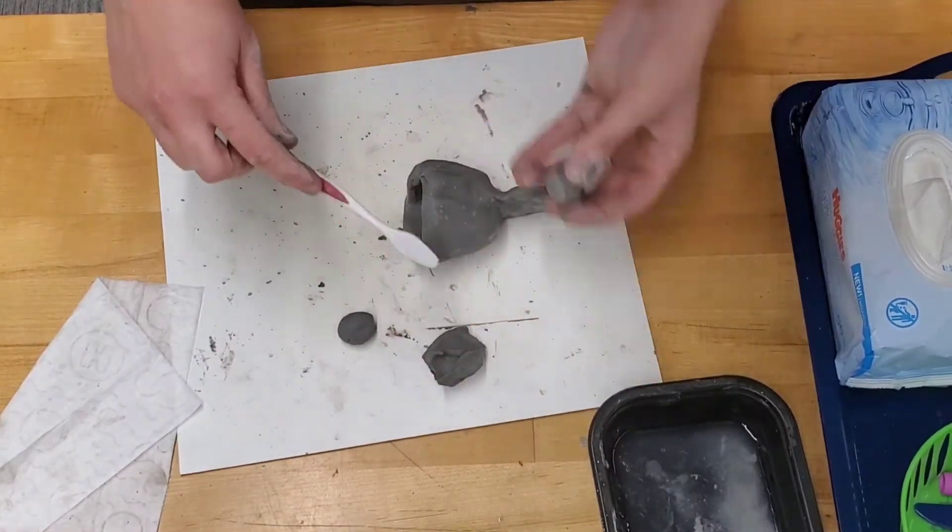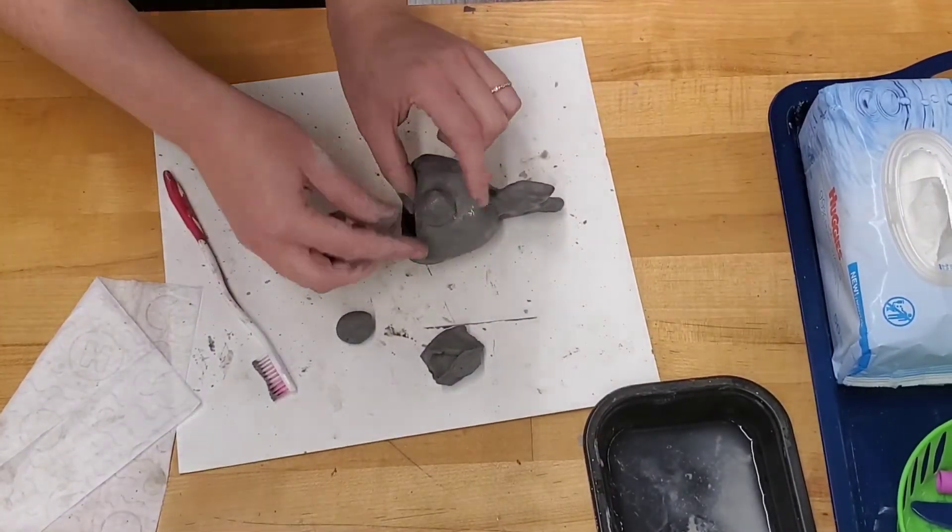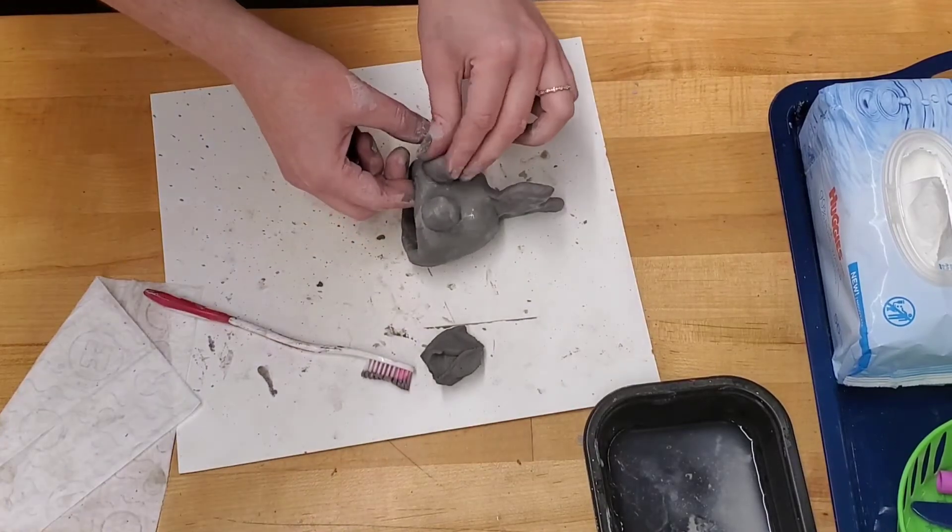Remember, the purpose of the toothbrush is to make small cuts in the clay. It is not to make the clay wet. You don't want it too wet or it won't stick together.